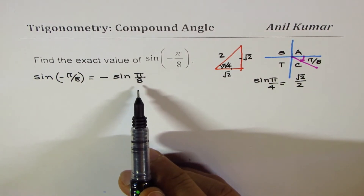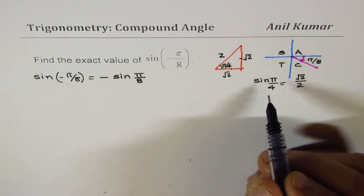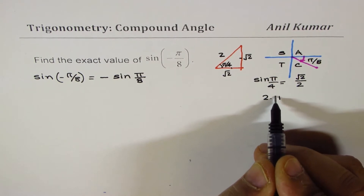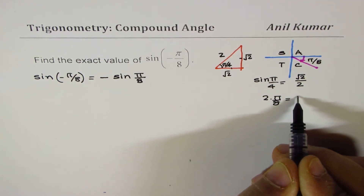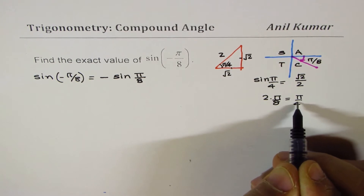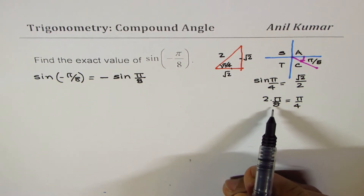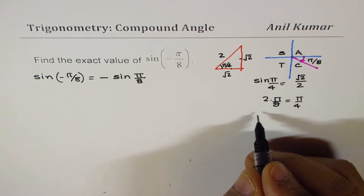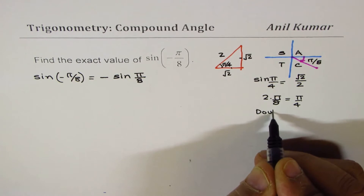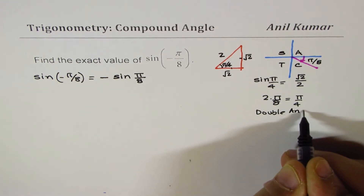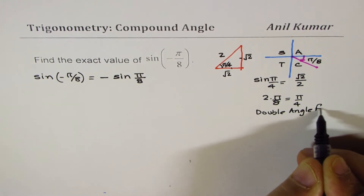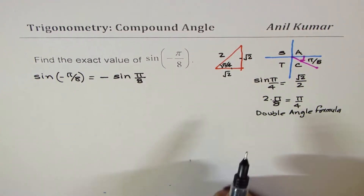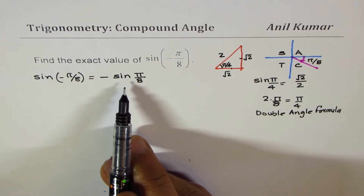But we don't know what π/8 is. How are they related? Well, 2 times π/8 equals π/4. So 2 times π/8 is equal to π/4, which means we could apply the double angle formula. That gives us a hint that we could apply the double angle formula to find this value.